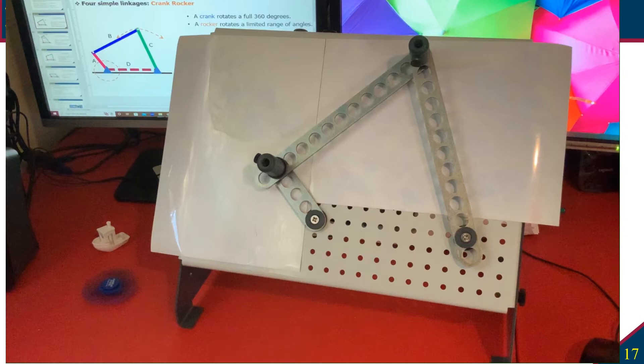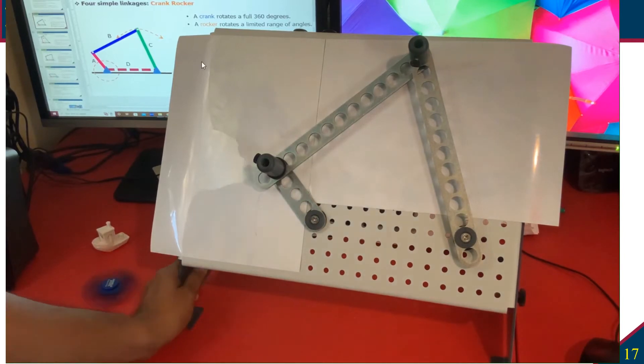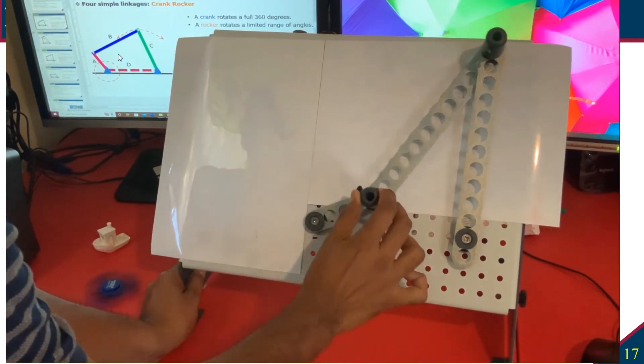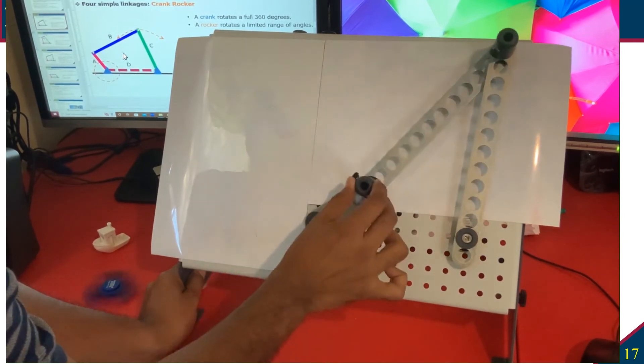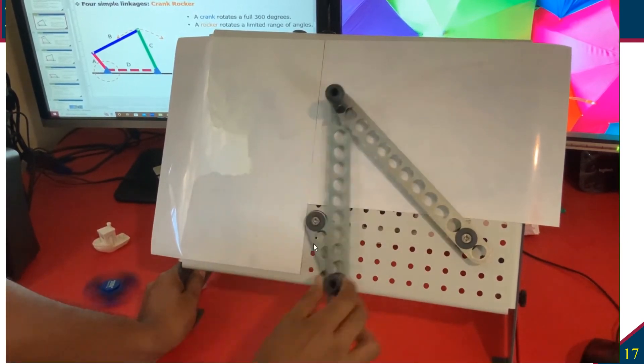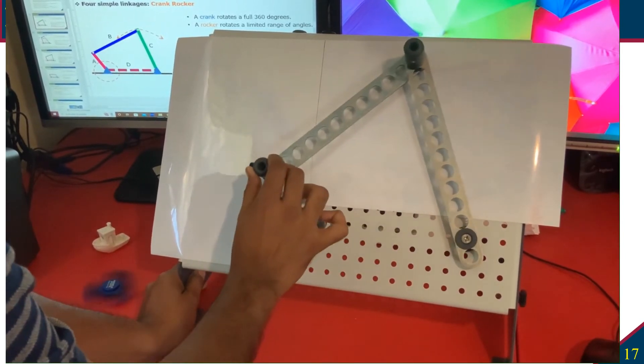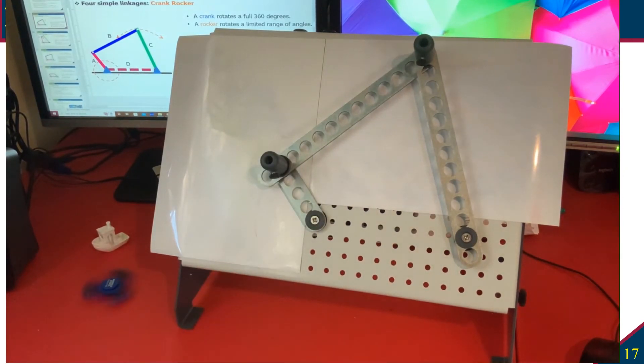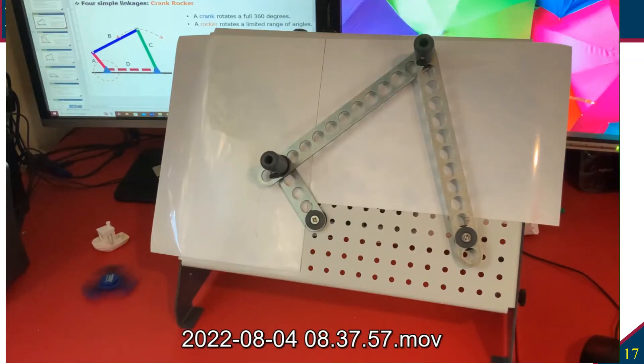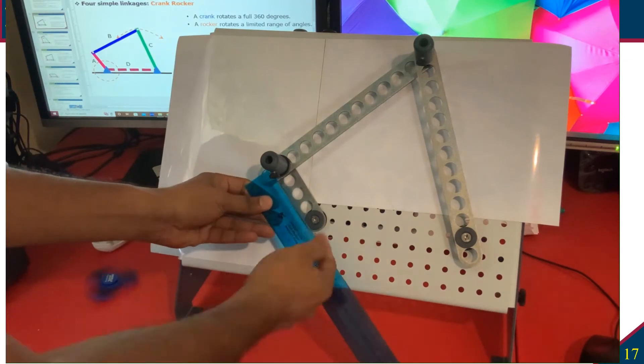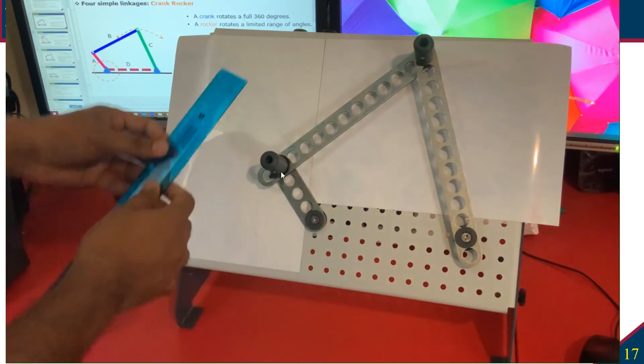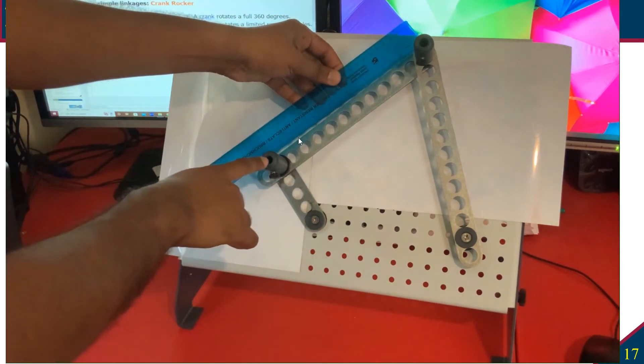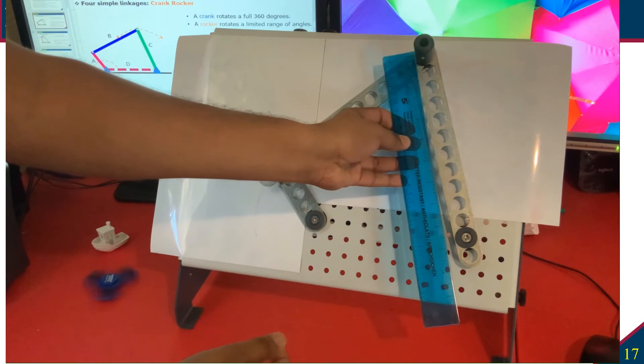We will also check whether our arrangement validates the theory that we have learned so far in this lab. Let's do our testing. This is the first one, the crank rocker, which is supposed to have 360 degree rotation. Once we are done with the test, you have to measure the length of each link from center to center, and that will be your data collection.